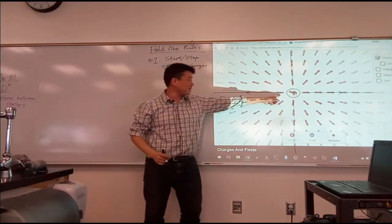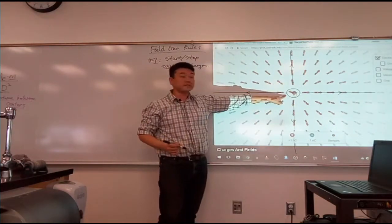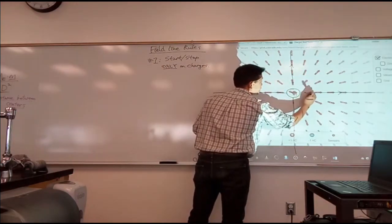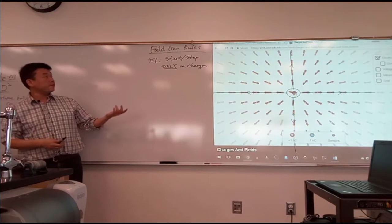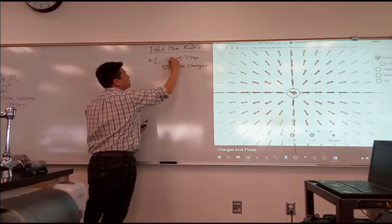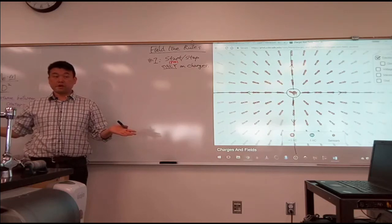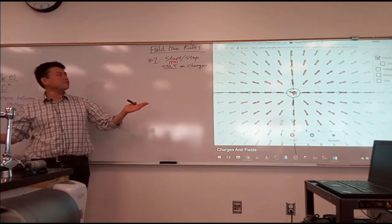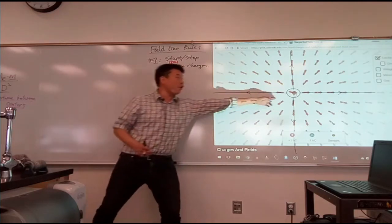So what that means is that this line that I started from this point, I should really draw backward until it looks like it's starting from a charge. Same thing with these three lines. I have to connect them back until they look like they're starting from the positive charge here. So in other words, field lines can only start on a positive charge. Where do you think field lines can stop? Well, another positive charge or another what? Yeah, why couldn't field lines stop at positive charge?